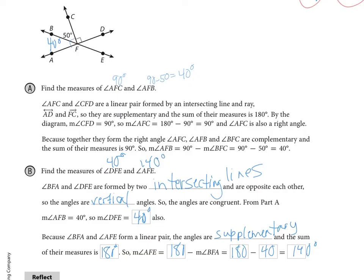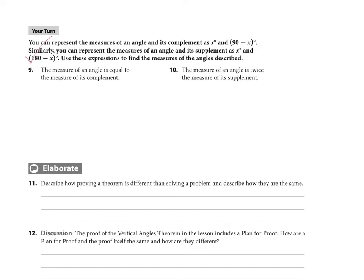The next thing I want you to do on page 168 is take a pause. You have two your turns that are being assigned to you, 9 and 10. Read carefully through the instructions here. It says you can represent the measures of an angle and its complement as an unknown x and then its complement would be 90 minus x. Similarly, you can represent the measures of an angle and its supplement as x and then its supplement is 180 minus x. You're going to use those expressions to set up an equation and find the measures of the angles that are described. Make sure you solve these before you move on to videos for 4-2.